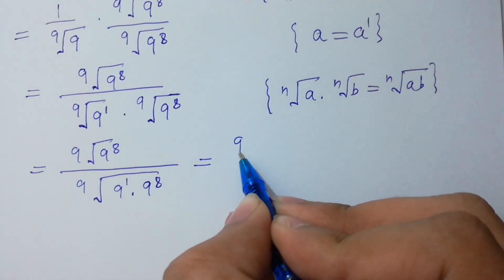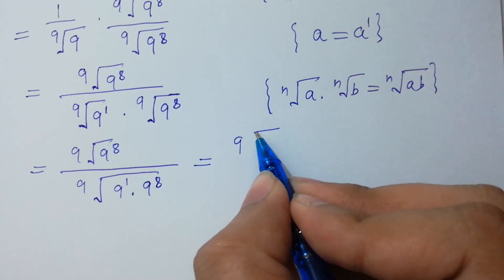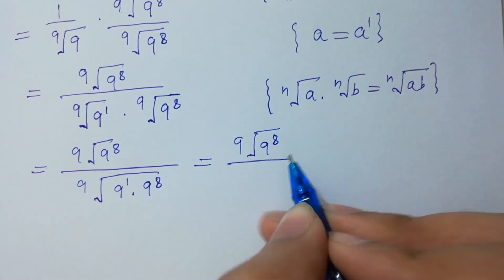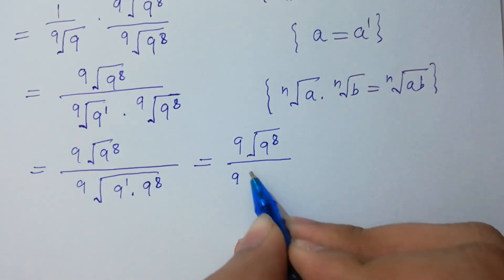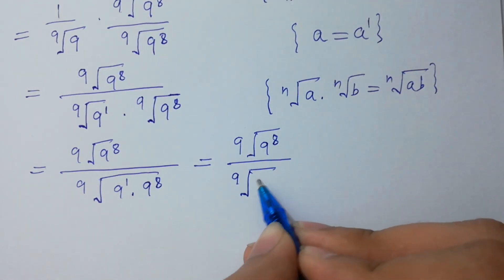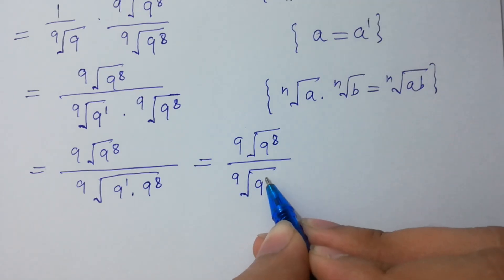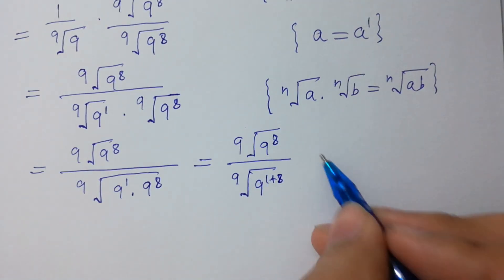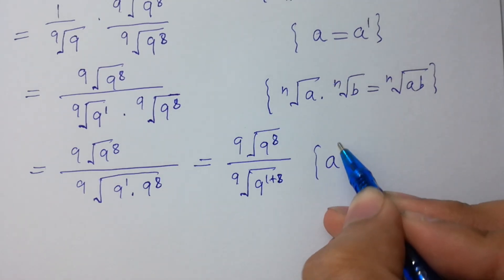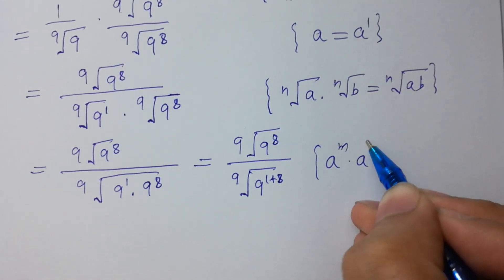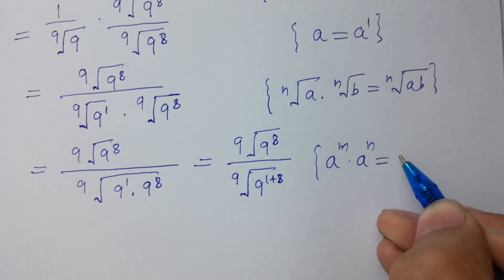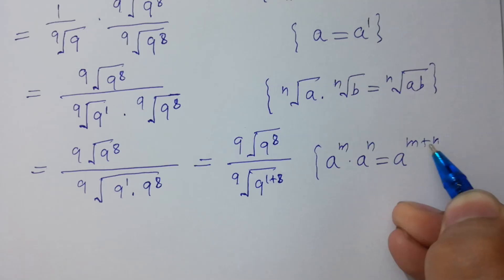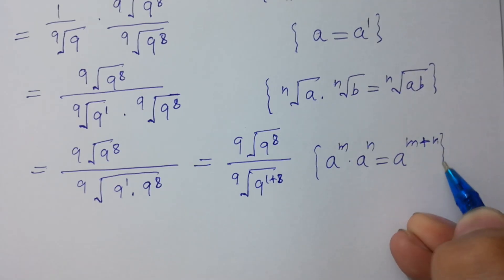9th root of 9 to the power 8, divided by 9th root of 9 to the power 1 plus 8. Since a to the power m times a to the power n equals a to the power m plus n, the powers add together.